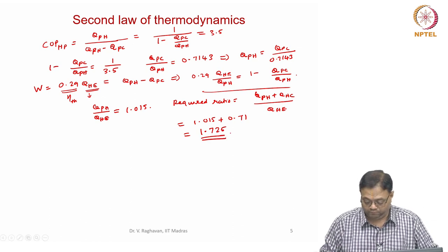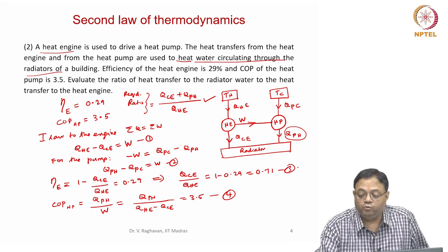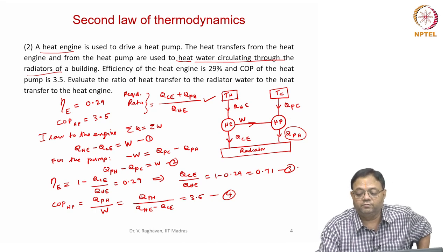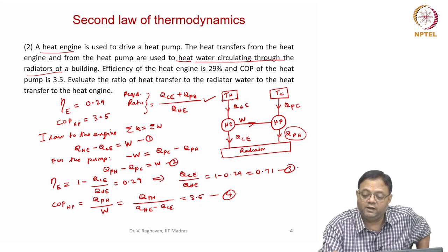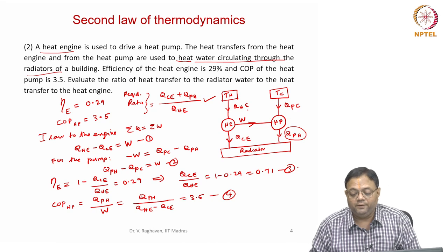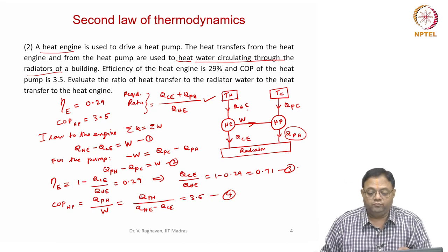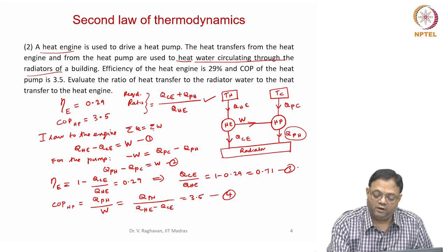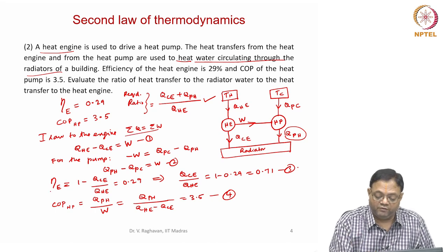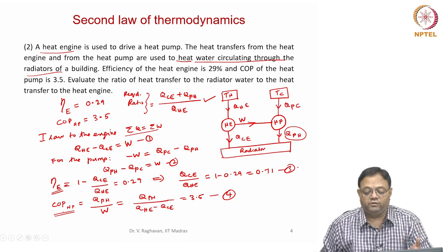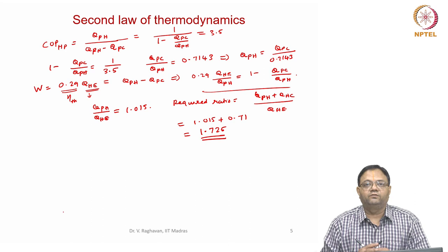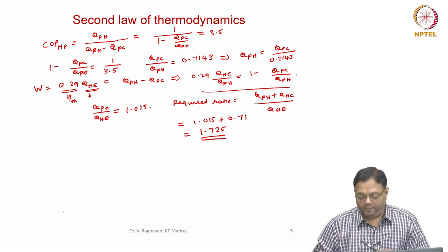In this problem the two devices are not reversible. The rejected heat from both the heat engine and heat pump are given to the radiator. The total heat divided by the heat received by the engine is what is asked. The procedure: first law is applied, then definitions for efficiency and COP are applied using the given values, connecting the heat transfers between the engine and pump to get the answer.